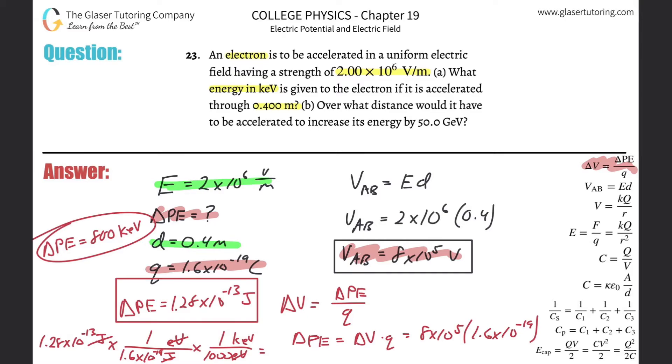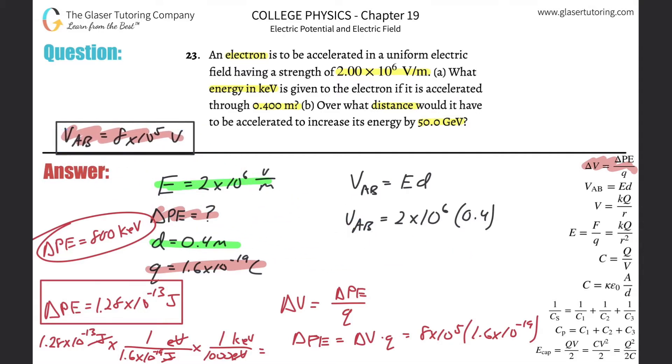Now, where are we going to put letter B? Over what distance would it have to be accelerated to increase its energy by 50 giga electron volts? I don't want to do this one. What do you say? I skip it? All right, I'll do it. So where am I going to put it? Let me just erase some of this work. Let me keep some of these values though. They might come in handy.